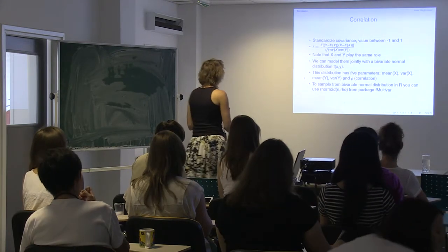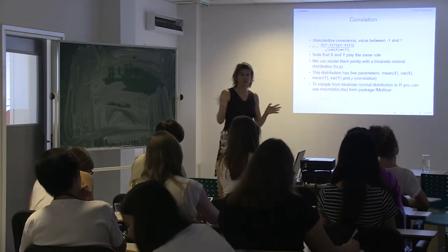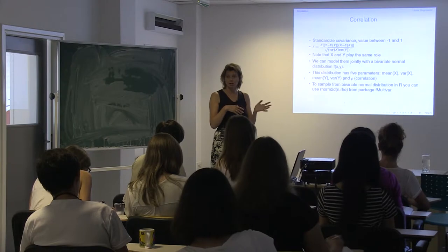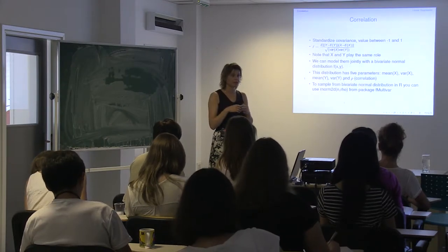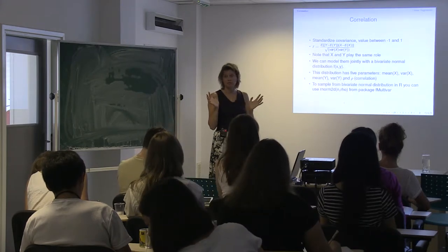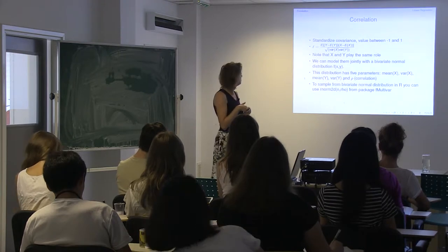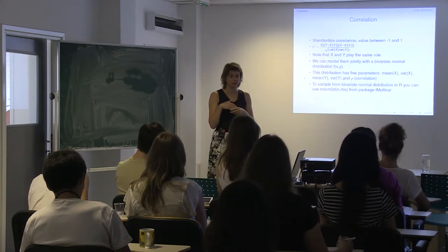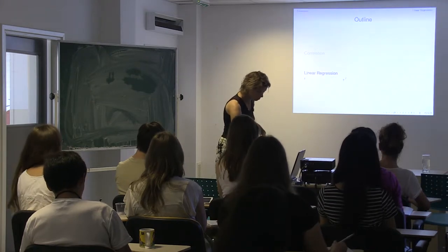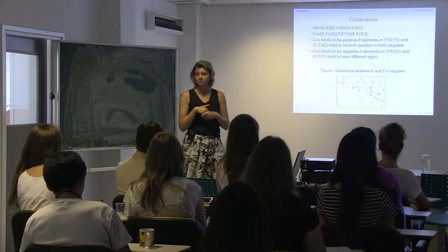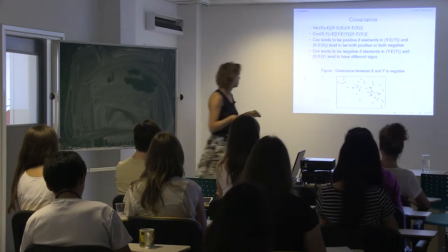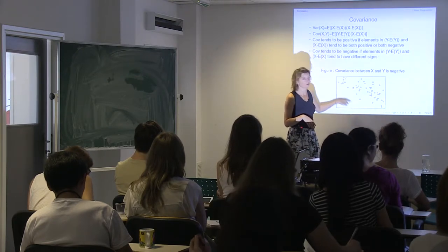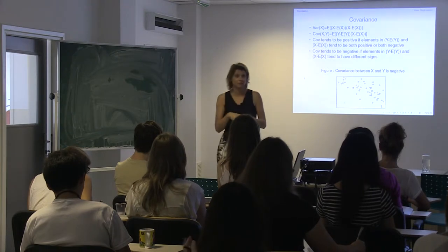The problem is that the covariance can have any value, because it depends on the variation of X and Y. To interpret it we like to standardize it — we want a value between minus 1 and 1, where 1 is the maximum positive correlation, minus 1 is the maximum negative correlation, and 0 means no correlation at all. If there's no correlation, this figure would look like just a cloud of points — a circle of points.